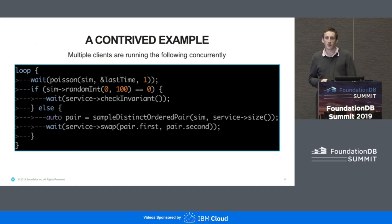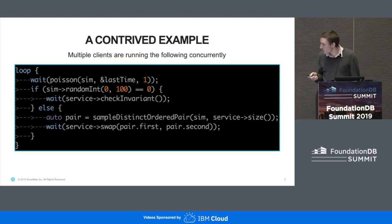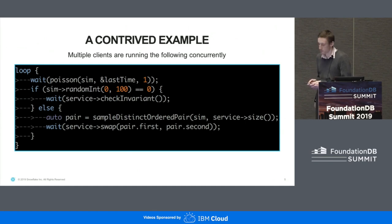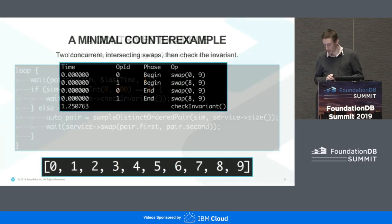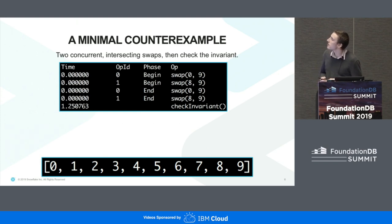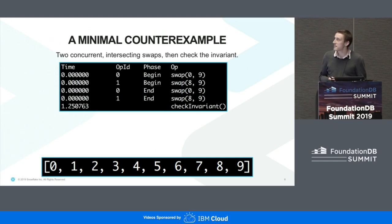This is what our clients will be doing. We'll have a couple of concurrent clients running; they'll wait a random amount of time, and some of the time they'll check our invariant, and the rest of the time they will swap two random elements. This is our minimal counter example: two concurrent swaps that are going to interleave and swap the same element — here they're both swapping nine — and then immediately after we'll check the invariant.